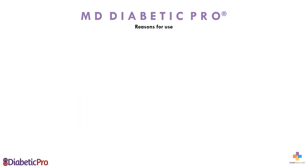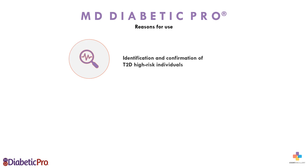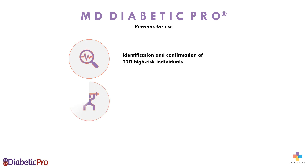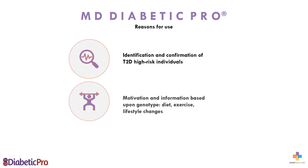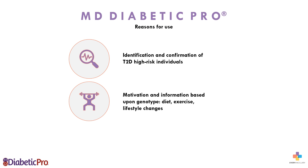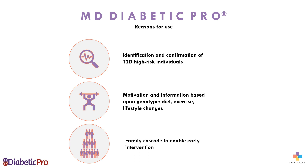MD Diabetic Pro is used to identify patients at high risk for developing type 2 diabetes, and provides extra motivation and additional information based upon genotype to implement and adhere to behavior intervention measures, including diet, exercise, and lifestyle changes, or as a family cascade to enable early intervention.